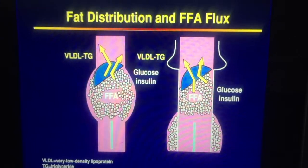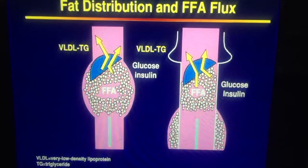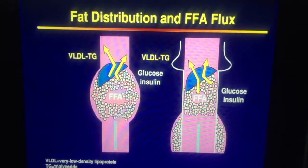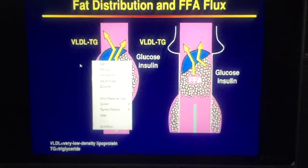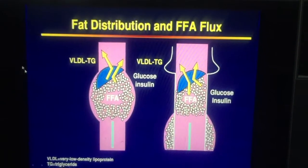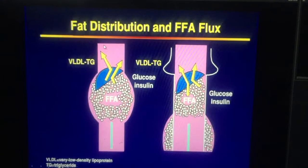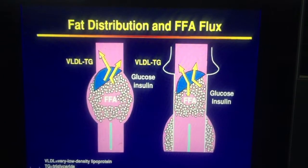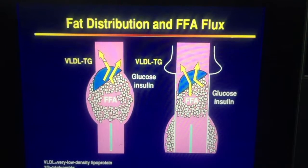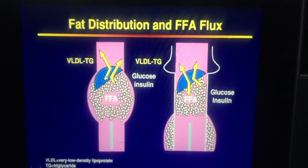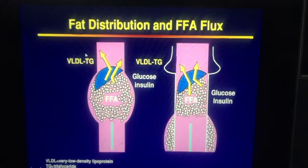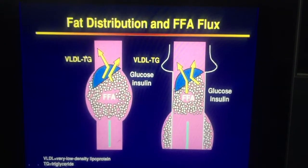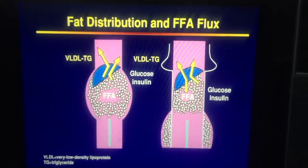The other player in this, besides glucose and insulin, is fat and free fatty acids. Someone with an increased visceral adipose tissue mass tends to have a much higher free fatty acid flux. As a result, the liver is inundated with fatty acids, they put out more VLDL triglycerides, and dyslipidemia tends to occur in these people.